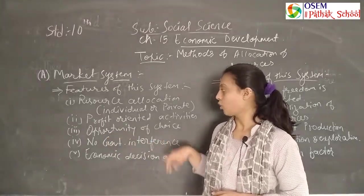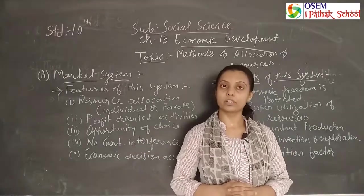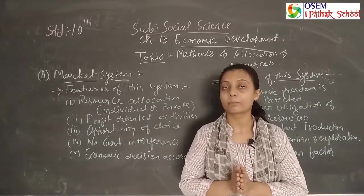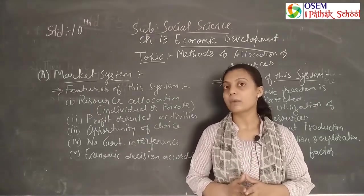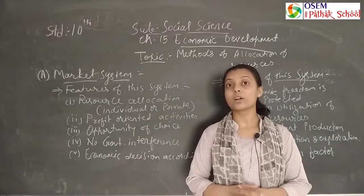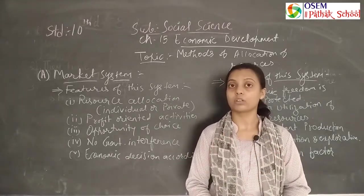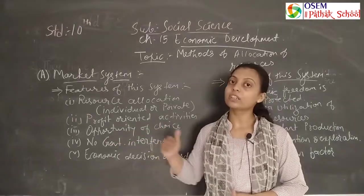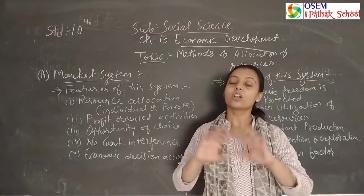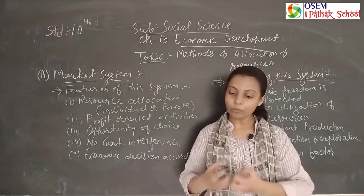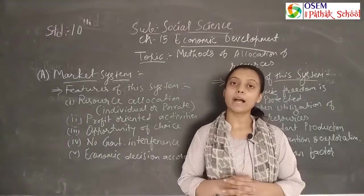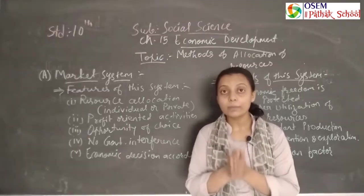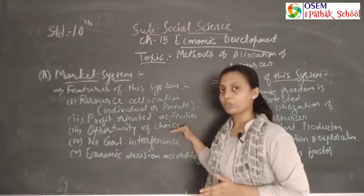The third feature is opportunity of choice. Consumers or customers have choice because there is not just only one person selling the product in the market. There are more members in the market who are selling different products, or selling the same products maybe at different prices. So opportunity of choice is there with consumers — they will be given a lot of choices, and from those choices they will buy what they want. Their wish and their belief will be fulfilled properly with optional choice.